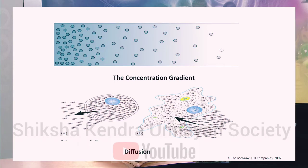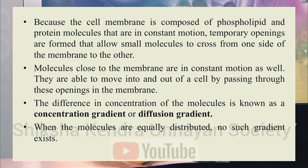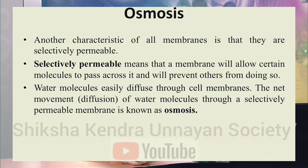The cell membrane is made up of phospholipid and protein molecules that are in constant motion. Temporary openings are formed that allow small molecules to cross from one side of the membrane to the other. Molecules close to the membrane are also in constant motion and are able to move in and out through passages formed in the cell membrane. The difference in concentration of molecules is known as the concentration gradient or diffusion gradient, and movement continues until no such gradient exists.